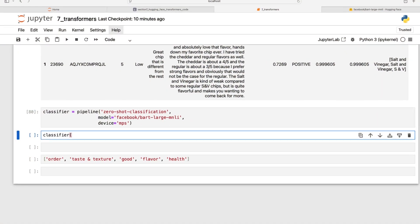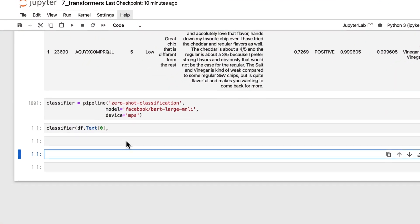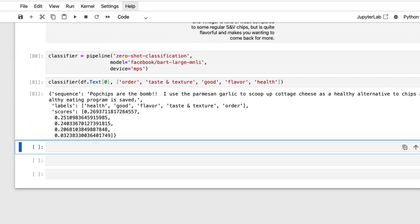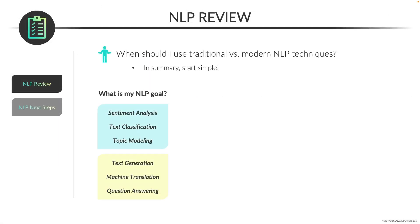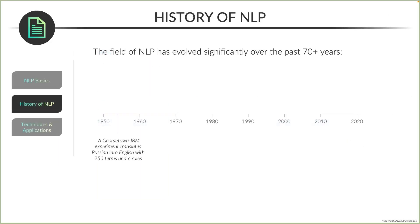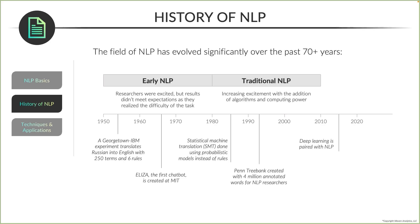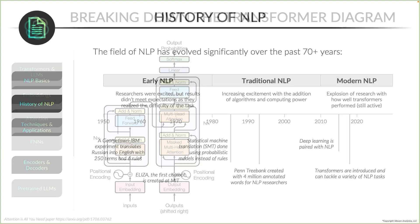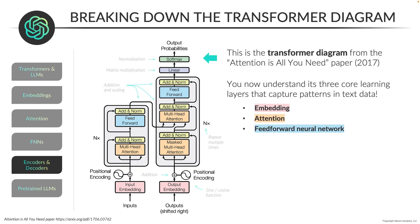This is a practical, hands-on course designed to give you a comprehensive overview of the NLP space and teach you the essential skills for working with text data in Python. We'll start by reviewing the history and evolution of NLP over the past 70 years, up to the most popular LLM architecture at the moment, transformers.